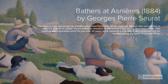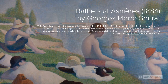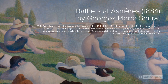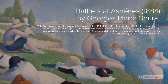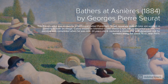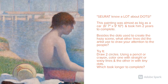Bathers at Asnières by Georges-Pierre Seurat. This French artist was known for a technique called pointillism — small, separate dots of color applied in patterns to form an image. Colors would be blended by the viewer's eye, not by the artist's brush. This painting was completed when he was only 24 years old and captured a moment of well-deserved rest for the workers along the scene. Seurat knew a lot about dots: this painting was almost as big as a car and took him two years to complete.